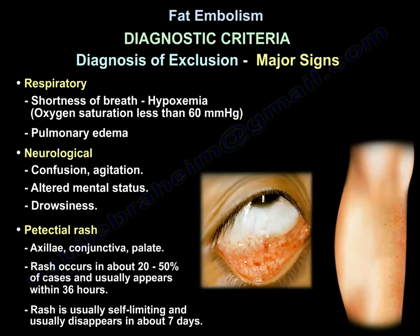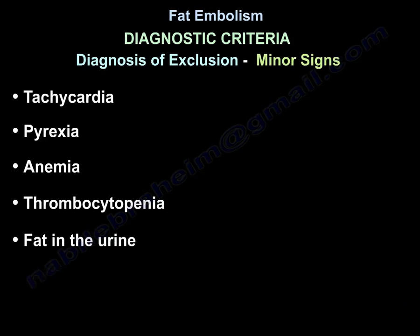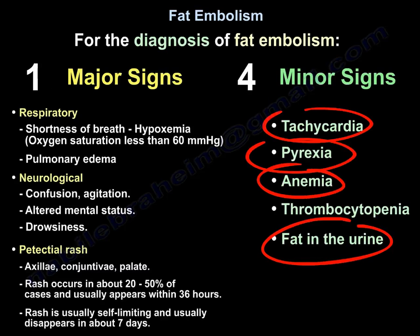The rash usually appears within 36 hours and is self-limited, usually disappearing in about 7 days. The minor signs include tachycardia, pyrexia, anemia, thrombocytopenia, and fat in the urine. You need four minor signs and one major sign for the diagnosis of fat embolism.